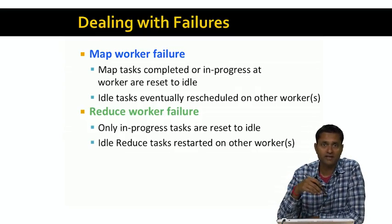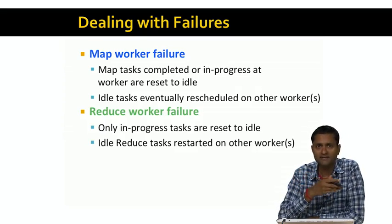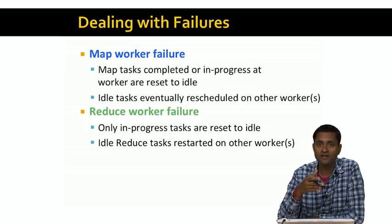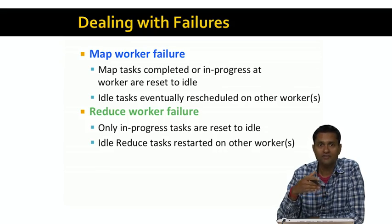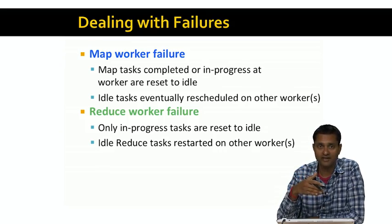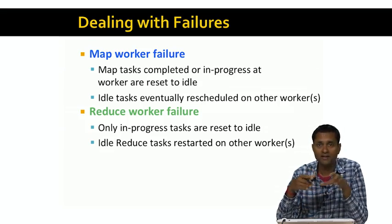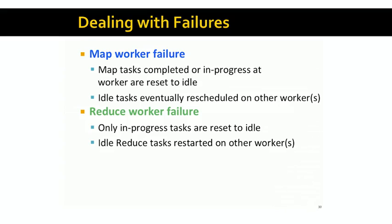If a reduce worker fails, on the other hand, only the in-progress tasks are set to idle. The tasks that have been completed by the reduce worker don't need to be set to idle, because the output of the reduce worker is the final output and it's written to the distributed file system, not to the local file system of the reduce worker. Since the output is written to the distributed file system, it is not lost even if the reduce worker fails. The idle reduce tasks will be restarted on other workers eventually.